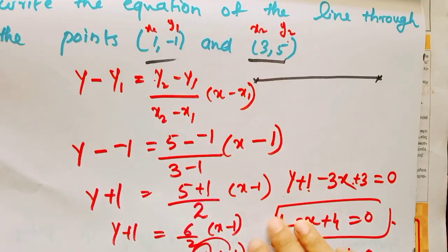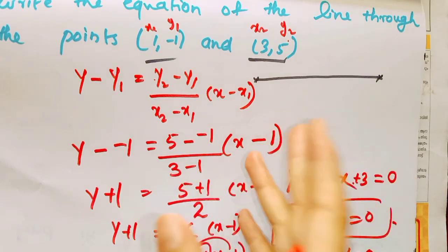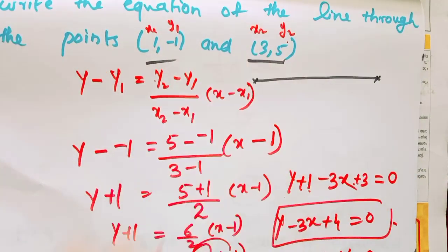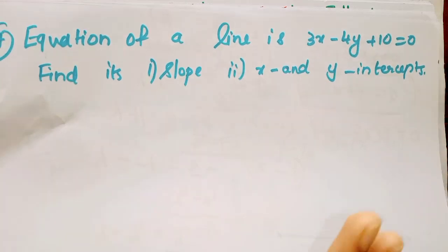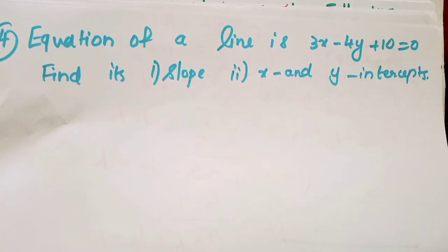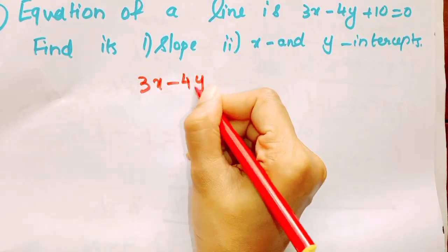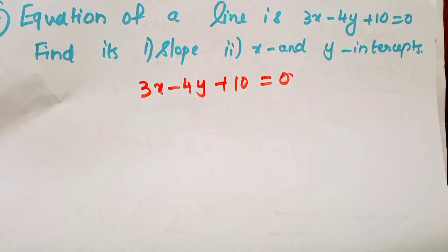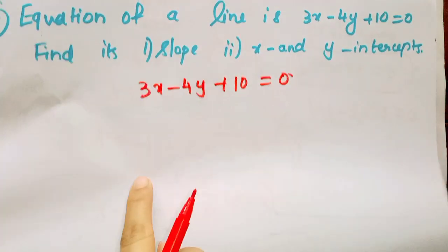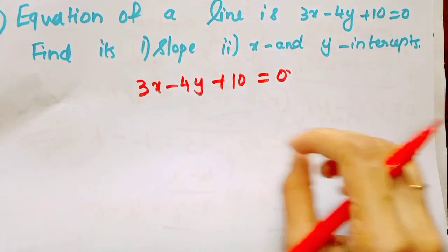Now we are going to take a slope and find it by multiplying the two lines. We are going to learn a point and a slope. The line is 3x minus 4y plus 10 equals 0. We need to find the slope, x-intercept and y-intercept from this equation.